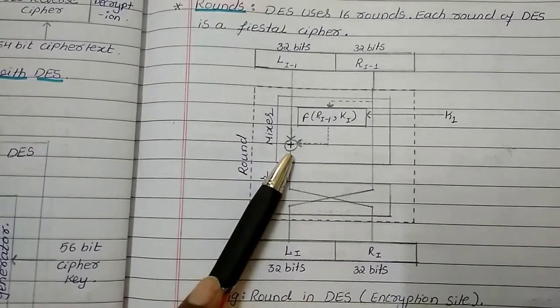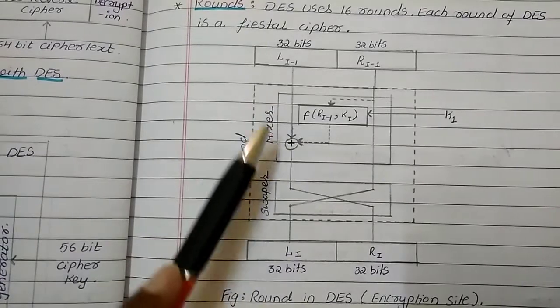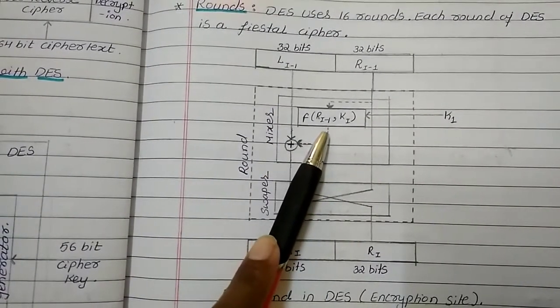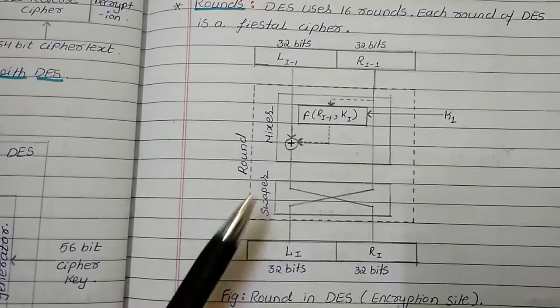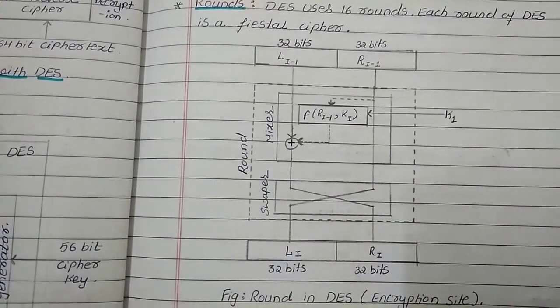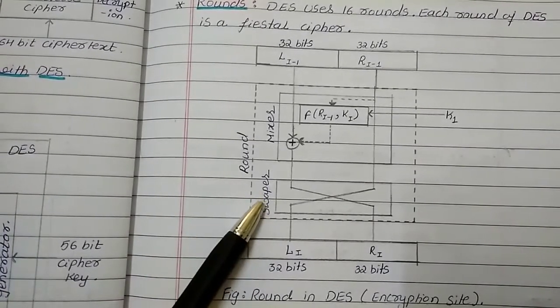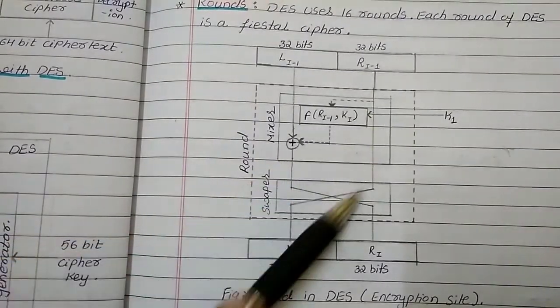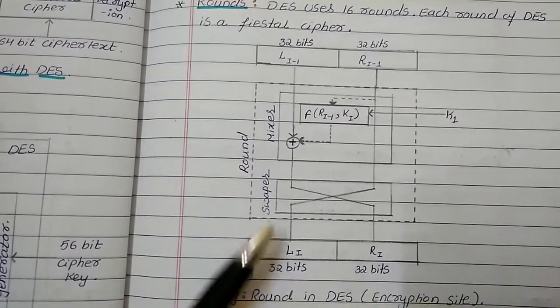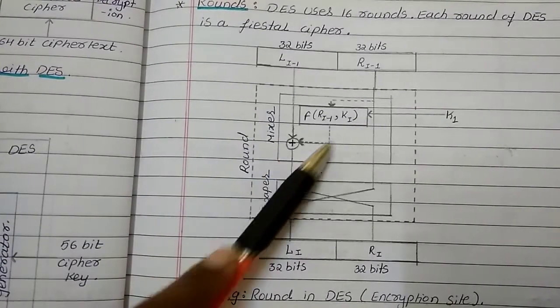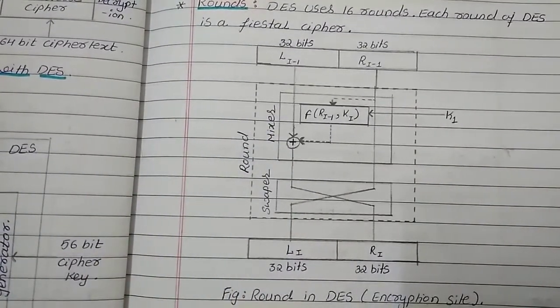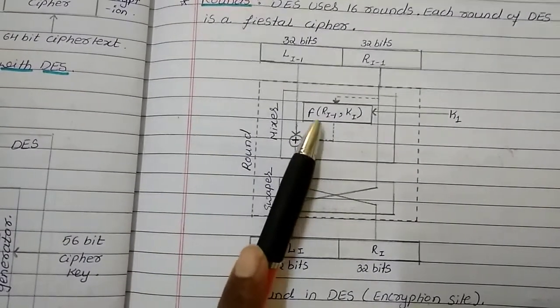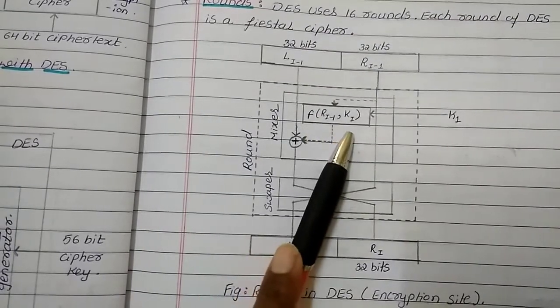In the mixer, we are going to XOR the leftmost 32-bits with the function F of Ri minus 1, Ki. After performing this XOR, we are going to use the function called swapper. This swapper is going to swap the bits. The right 32-bits is coming to the left-hand side called Li. And the XOR output is coming to the right-hand side. So, now the question is what exactly is happening with this function F of Ri minus 1, Ki.